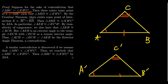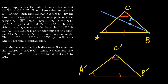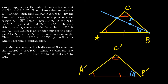If angle B is larger than angle B', we can copy angle B' into the interior of angle B. This gives us a point D interior to angle ABC such that angle ABD is congruent to angle A'B'C'. Since D is interior to angle ABC, the Crossbar Theorem applies and gives us a point of intersection E between segment AC and ray BD. So E lies on AC with ray BD passing through it.